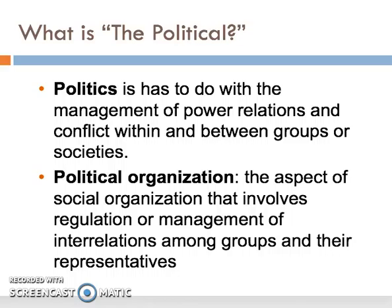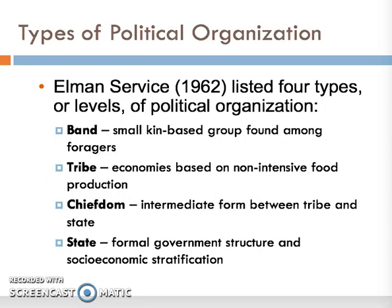What is the political? Politics has to do with the management of power relations within and between groups or societies. Political organization is that aspect of social organization that involves regulation or management of interrelations among groups and their representatives. Drawing on the classification of anthropologist Elman Service, most introductory anthropology textbooks identify four types of political organization of increasing scale and complexity. These are bands, tribes, chiefdoms, and states.